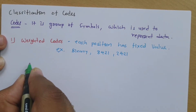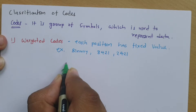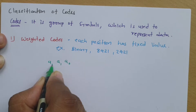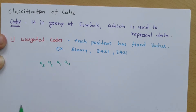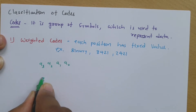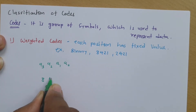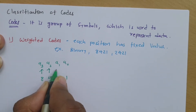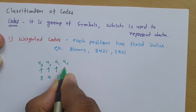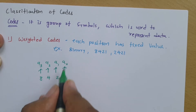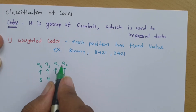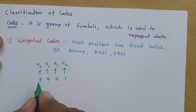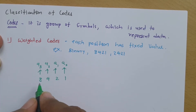To understand this with an example: if we have a four-digit code A0, A1, A2, and A3, and it is an 8421 code, then each position has a fixed assigned value. A0 has value 1, A1 has value 2, A2 has value 4, and A3 has value 8.